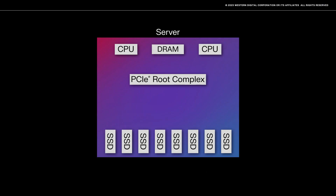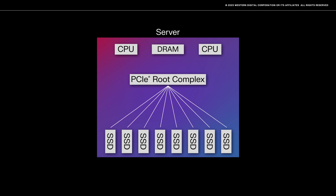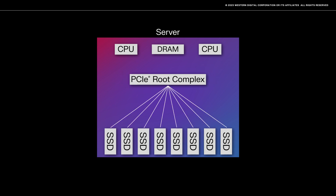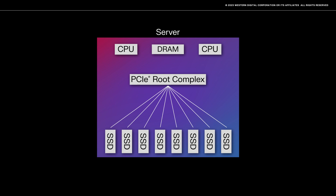Let's introduce the architecture that makes this possible. This is a very typical x86 server architecture deployed in data centers all over the world. One or more CPUs are connected to DRAM and a PCIe root complex that provides connectivity to peripheral devices including local SSD storage. We're showing eight SSDs here, but the number deployed is a function of the server you're using and can vary from none to 24 or even more SSDs in a single server.